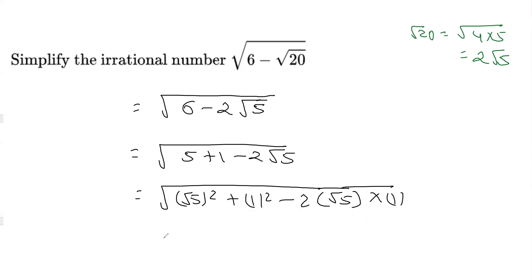We can write this equal to root 5 plus 1. There is an under root over here, so we may write this first as whole square and then whole under root.